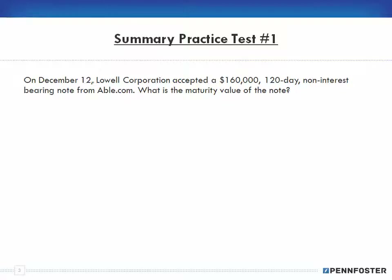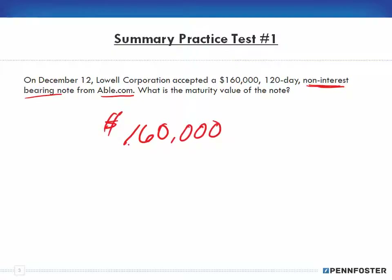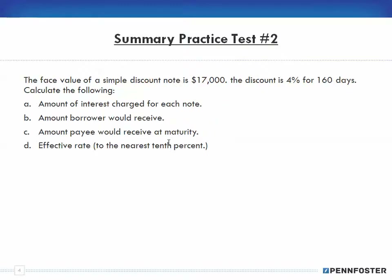Problem number one: on December 12th, Lowell Corporation accepted a $160,000, 120-day non-interest-bearing note from Able.com. What is the maturity value of the note? Well, if it's non-interest-bearing, that means the maturity value is $160,000 because we don't need to calculate any interest. The principal or face value is the maturity value.